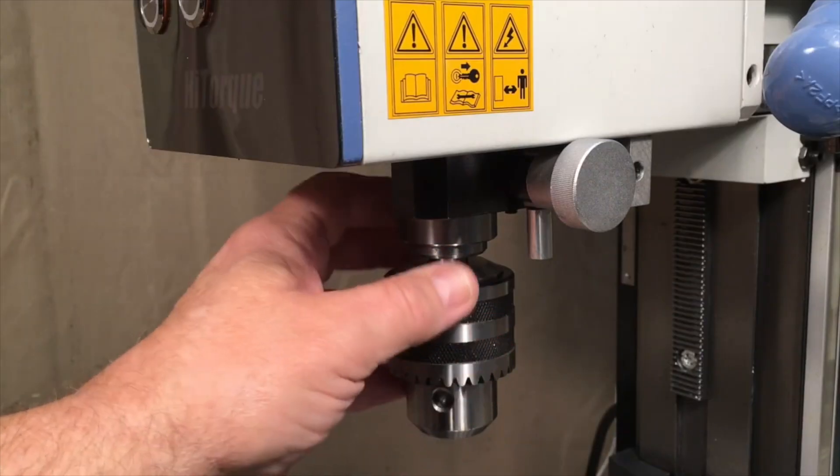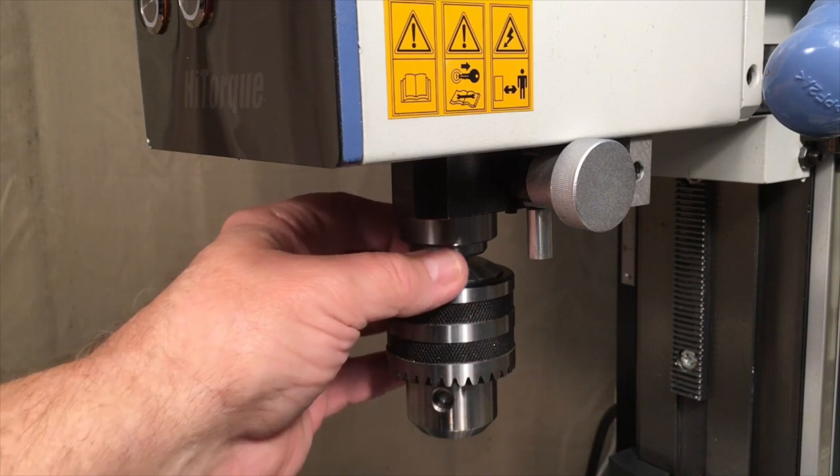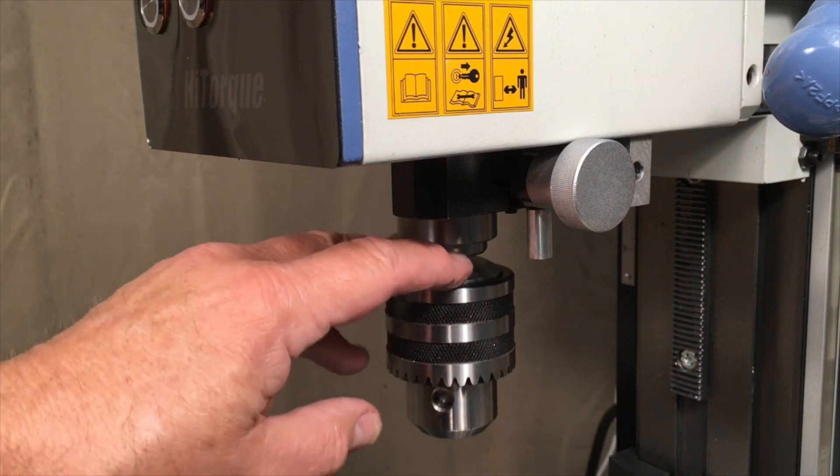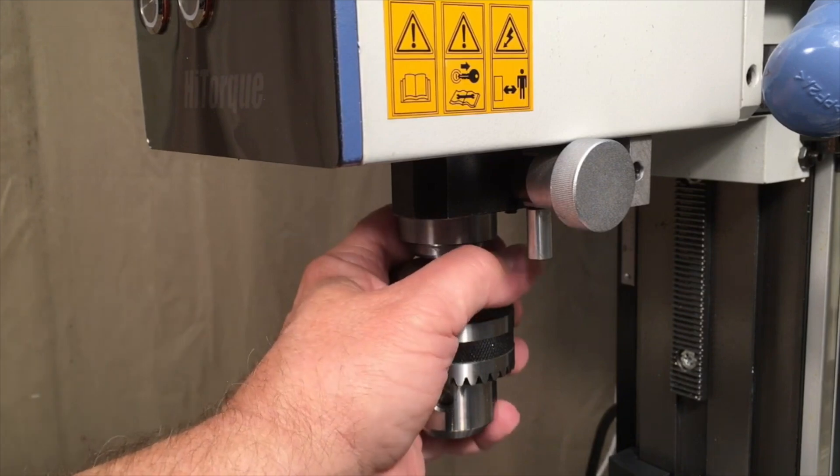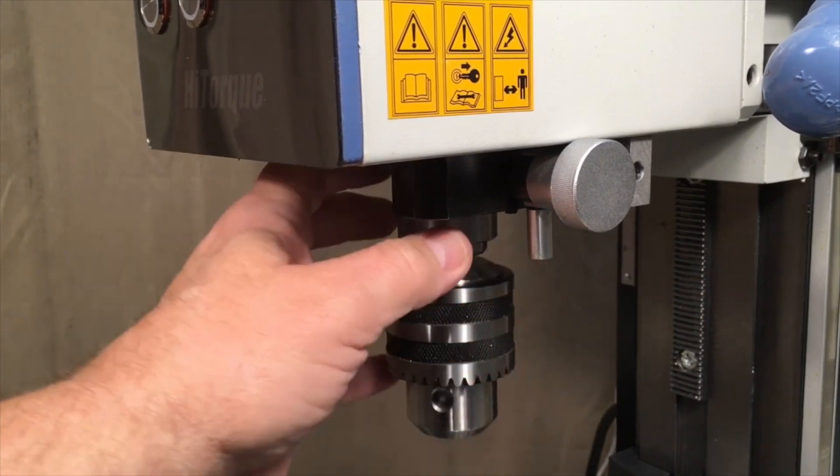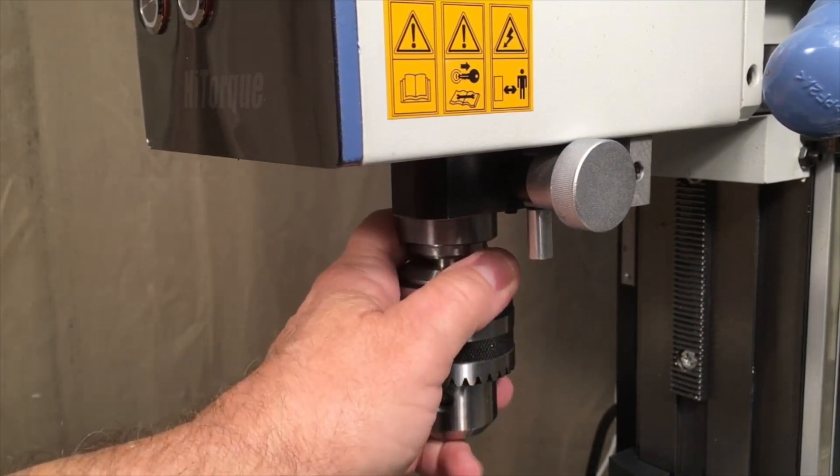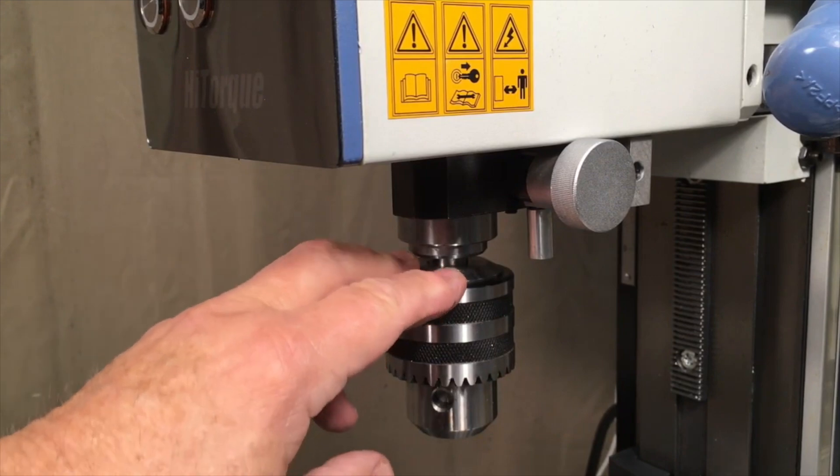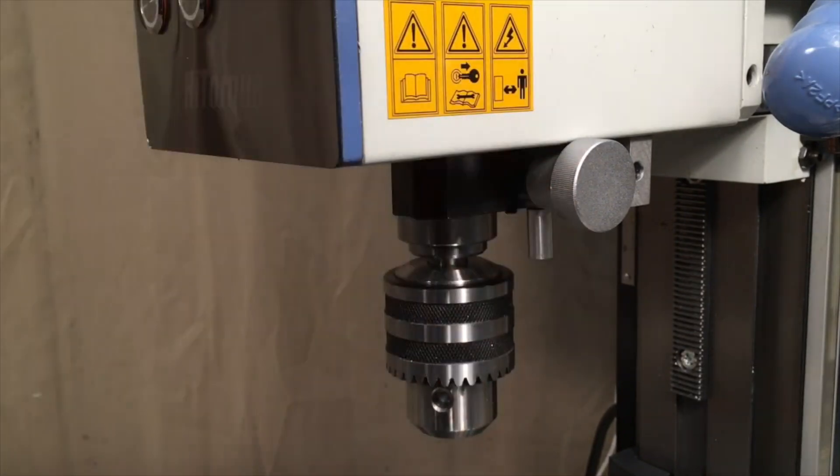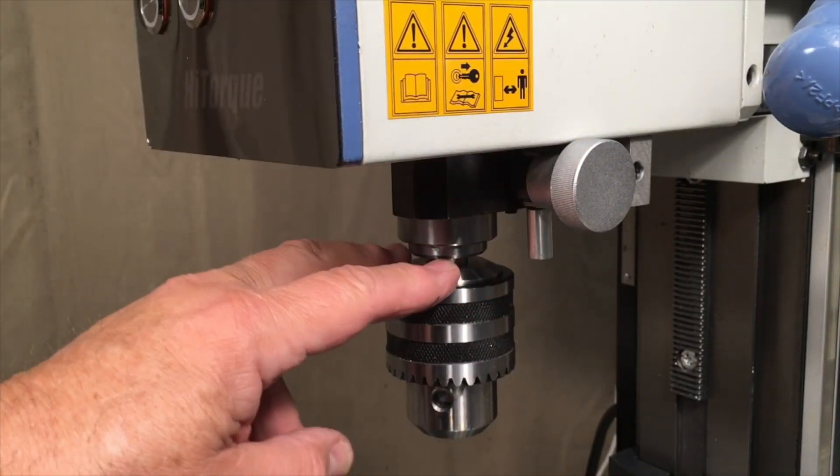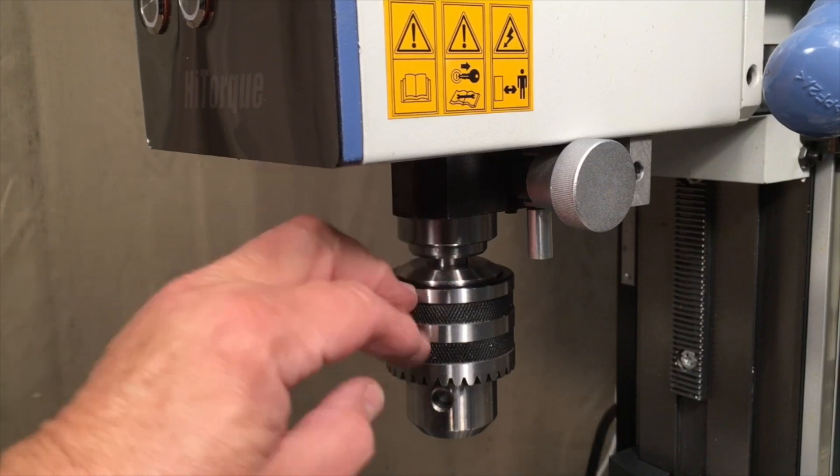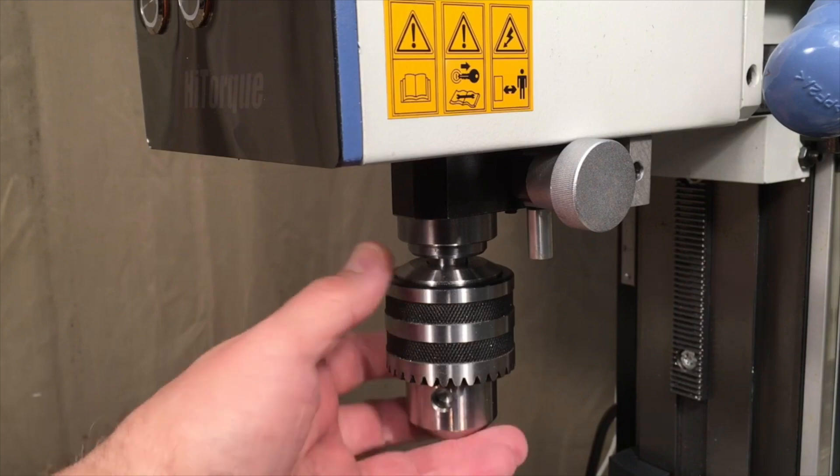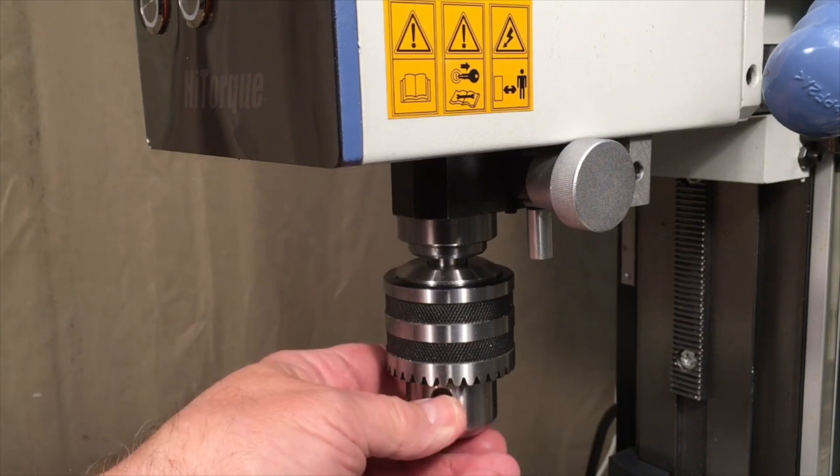You also have to have a way to break free the holding power between the taper on the chuck arbor and the taper in the spindle because the tapers themselves actually lock up pretty tightly. So the typical way to do that is to tap the top of the drawbar with a brass hammer. And just a small tap with a hammer is generally enough to break free the force of the taper and allow the chuck to drop down so that you can remove it completely.